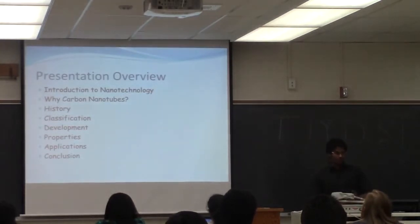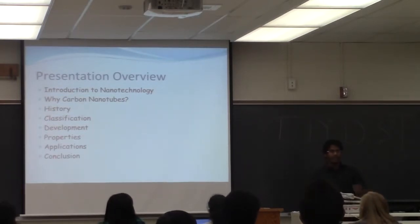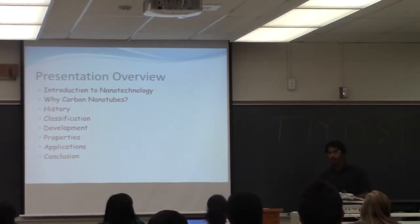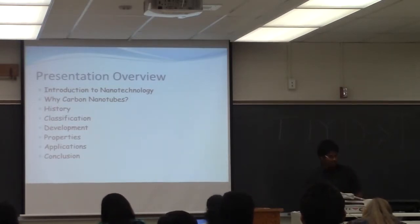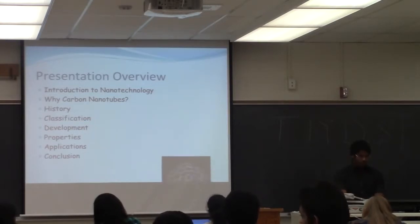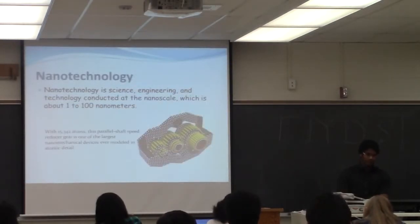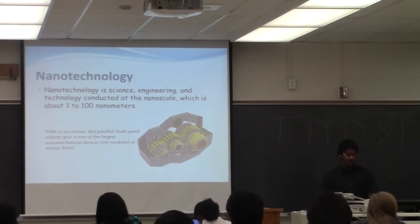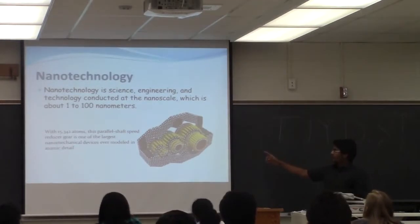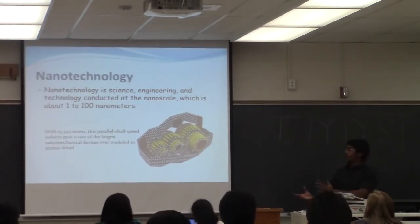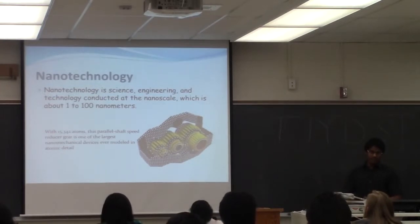Right from the word nanotechnology, we get 'nano' — nano is 10 to the power of negative 9. To the naked eye, a hair follicle is the smallest thing we can see, but a nanoparticle is 10,000 times smaller than our hair follicle. Nanotechnology is science, engineering, and technology conducted at the nanoscale, which is about 1 to 100 nanometers. This animated figure shows the latest nano engine made with nanoparticles — it has 15,342 atoms. This parallel shaft speed reducer gear is one of the largest nanomechanical devices ever modelled in atomic detail.